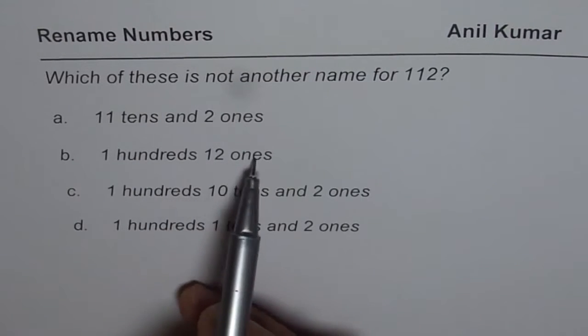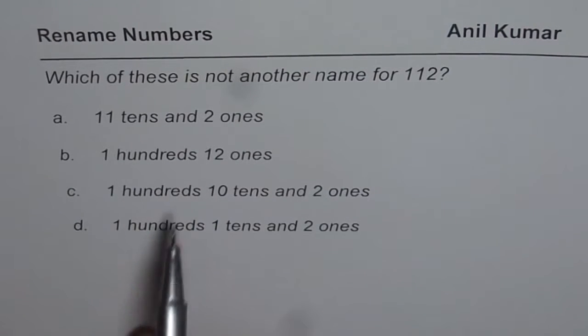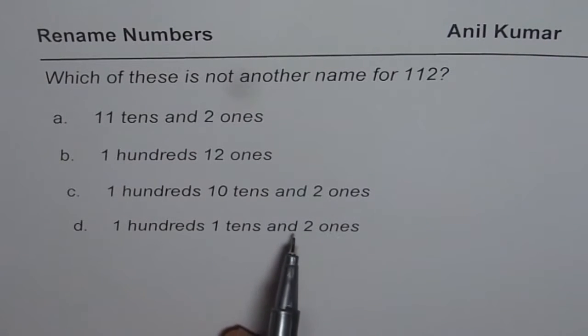Then we have 1 hundred 12 ones, 100s, 10 tens, 2 ones and 100s, 1 tens and 2 ones.